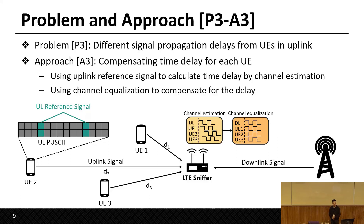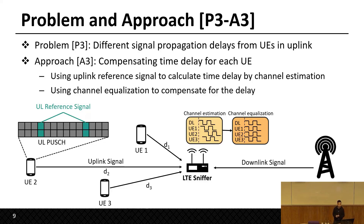Lastly, LTE Sniffer has to account for different signal propagation delays in the uplink, because UEs are located at different distances from the base station. To decode uplink traffic, the signal delay must be known. To solve this, LTE Sniffer utilizes the uplink reference signal to calculate the time delay via channel estimation, and then uses channel equalization to compensate for the delay.